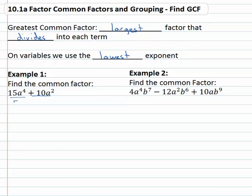Well 10 and 15 can both be divided by five. They also both have a's in common. In fact, using the lowest exponent they both have at least a squared in common. I could divide both terms by 5a squared and I would have no remainder. It would go in there evenly. So we say that the greatest common factor of both terms is 5a squared.